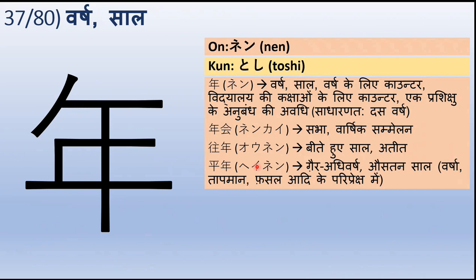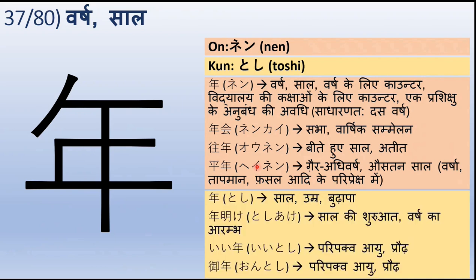Kunyomi mein iske arth Toshi yaani ki saal, umra, ya buhapa bhi ho sakta hai. Toshi-ya-ke yaani saal ki shuruat ya varsh ka aarambh yaani New Year. Uske baad e-Toshi ka arth hai paripakva aayu ya praad yaani old age ya advanced age. Aur on-Toshi ka arth hai ek baar phir paripakva aayu ya praad. Toshi, e-Toshi aur on-Toshi — ye sab kamovesh ek hi arth de rahe hain. Ye pestil radical se aaya hai.